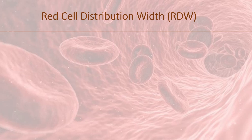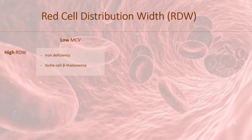RDW along with MCV gives more meaningful clues and can help in narrowing the differential diagnosis of anemia. If MCV is low and RDW is high, possible diseases are iron deficiency anemia and sickle cell beta-thalassemia. But with low MCV, if RDW is normal, the possibilities are anemia of chronic disease, heterozygous thalassemia, and hemoglobin E trait.